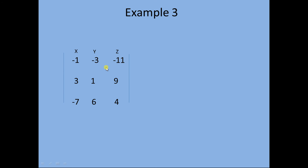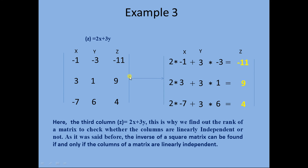I know that there is a linear dependence here. The combination is that the third column has been found by multiplying column 1 by 2 and column 2 by 3, then adding the results. For example, column y multiplied by 3 gives minus 9, and column x multiplied by 2 gives minus 2. When we add minus 9 and minus 2 we get minus 11.